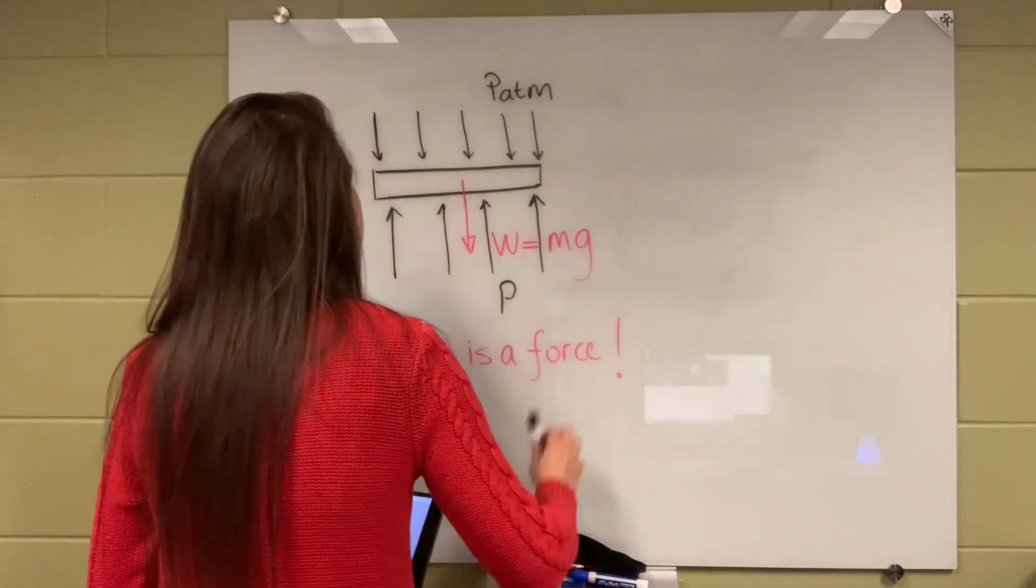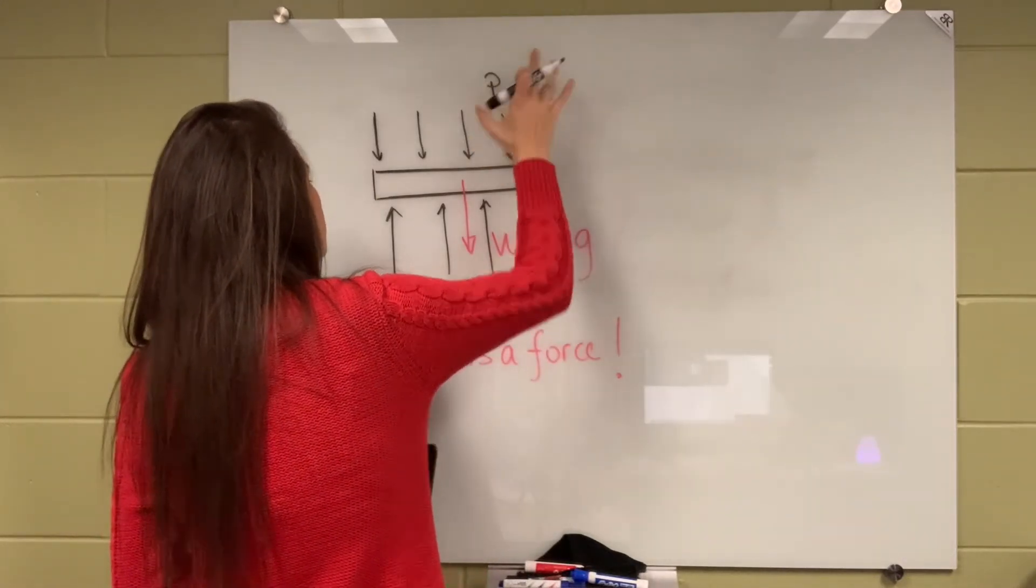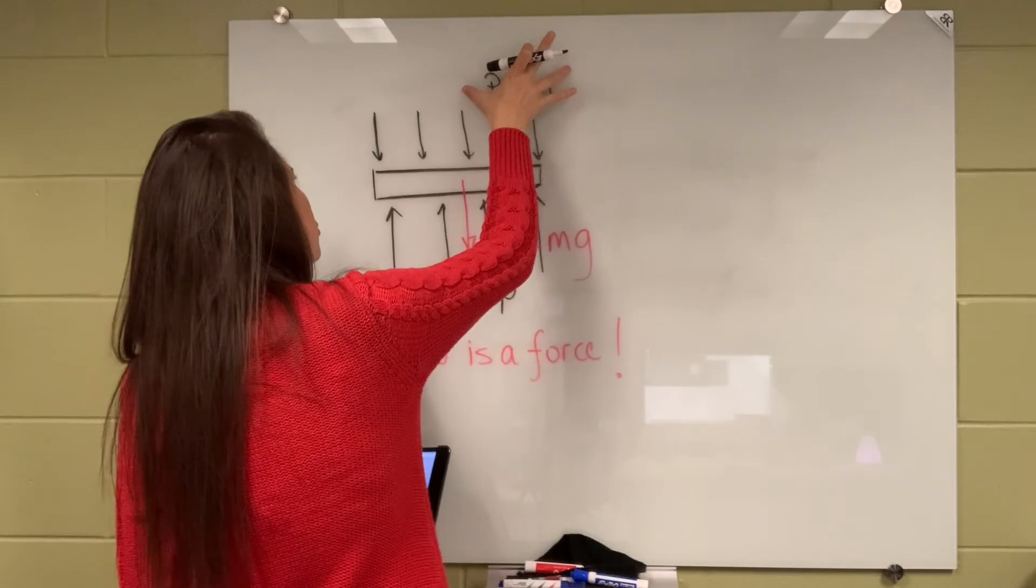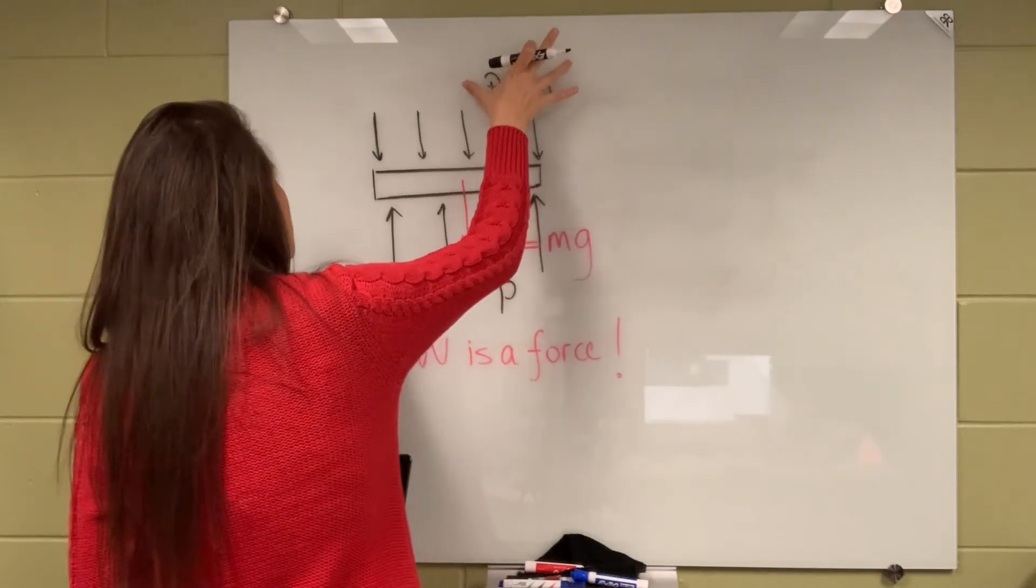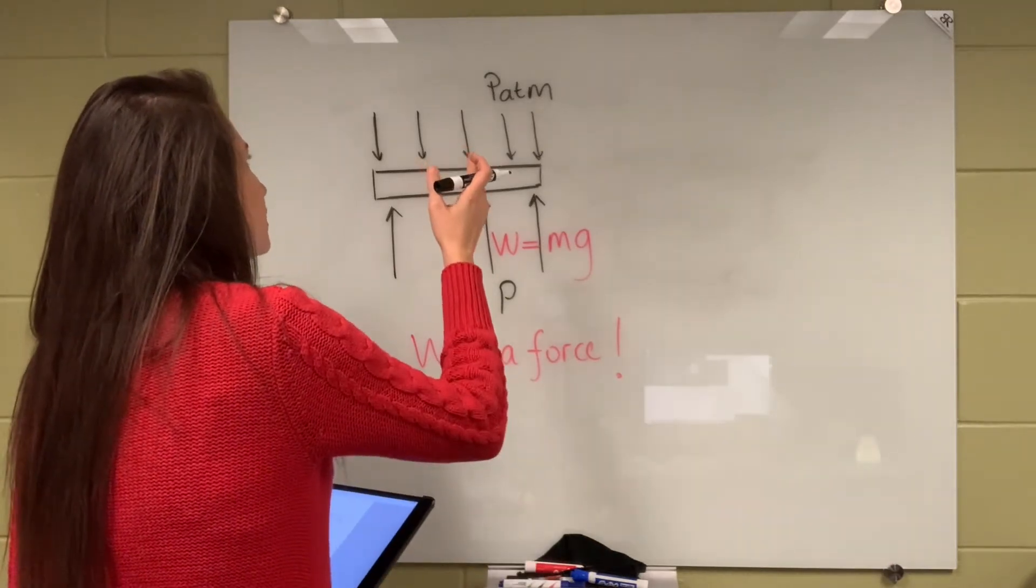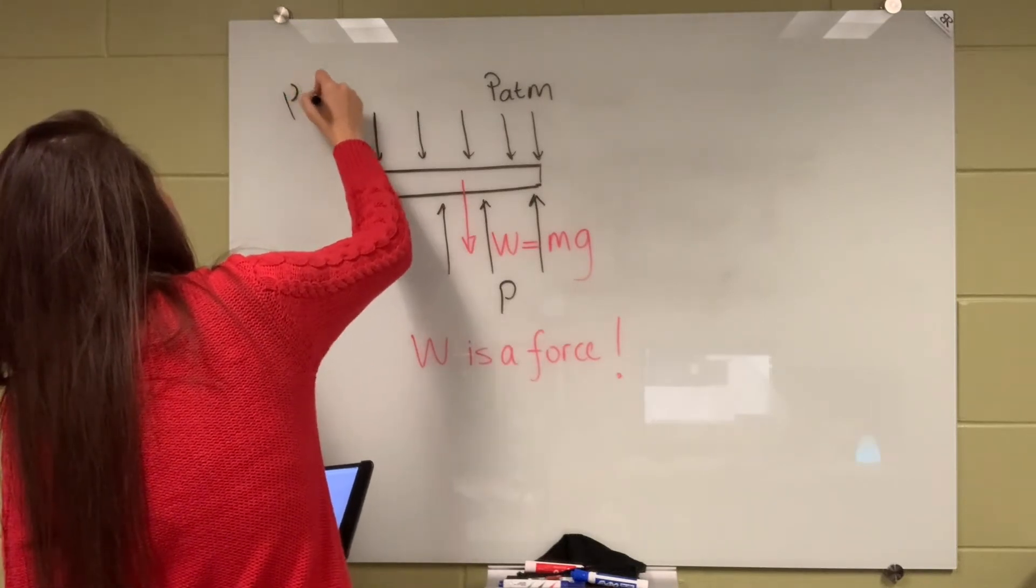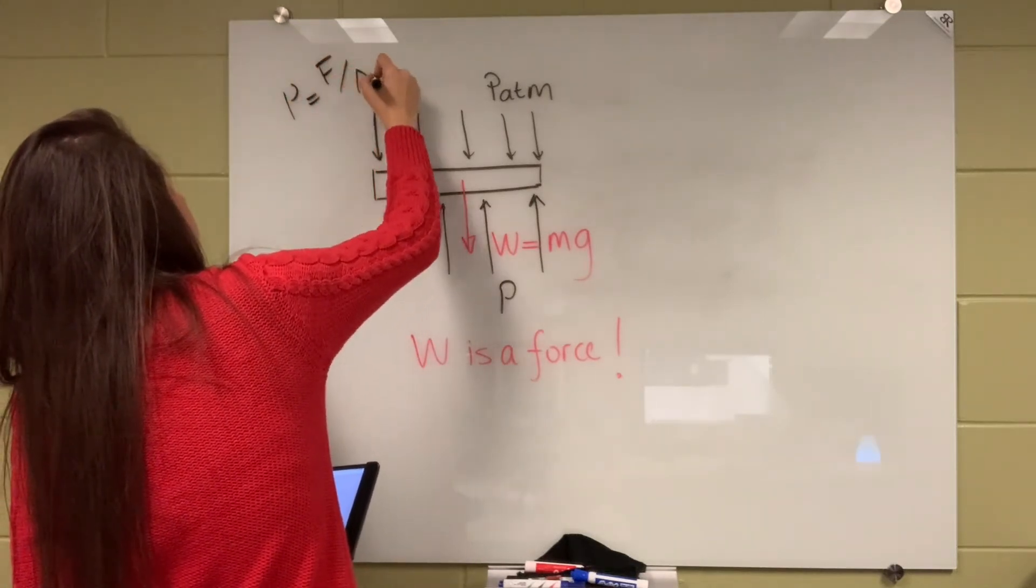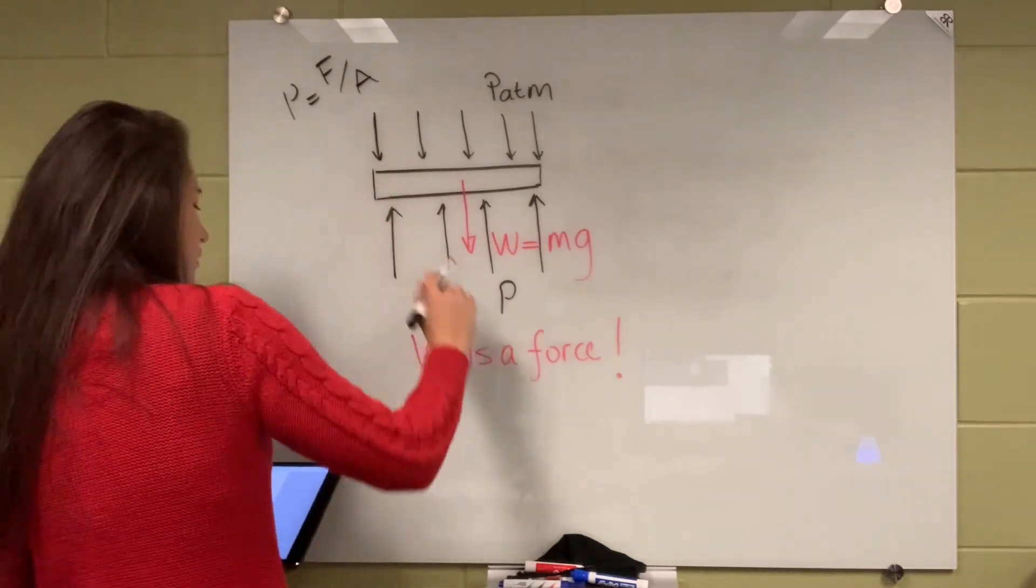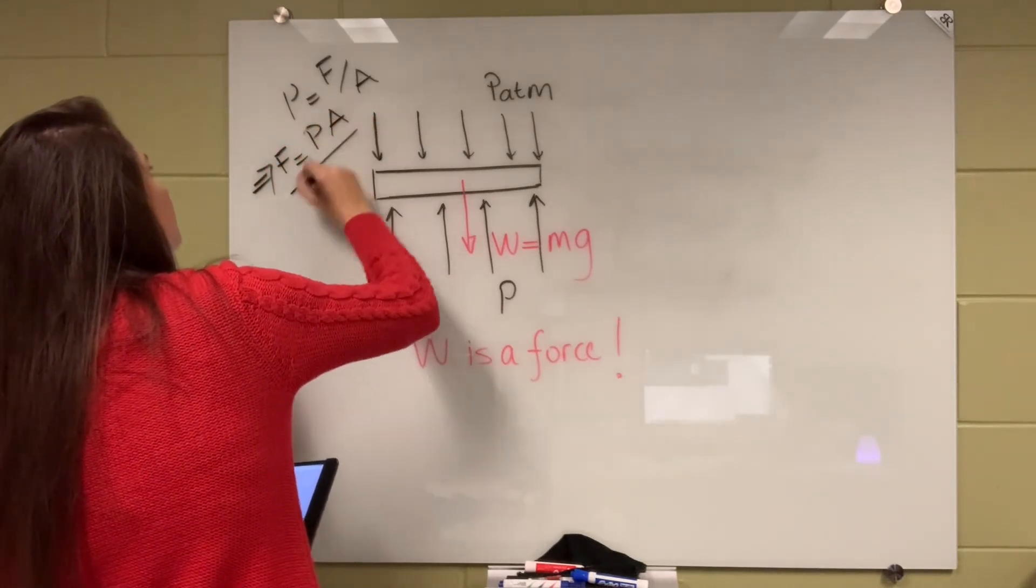So whatever is pushing down: atmospheric pressure force together with the weight. But weight is a force by itself, and we need to convert this pressure to force. We need to write it in terms of force. We know that pressure is equal to force over area. Therefore, force equals pressure times area.